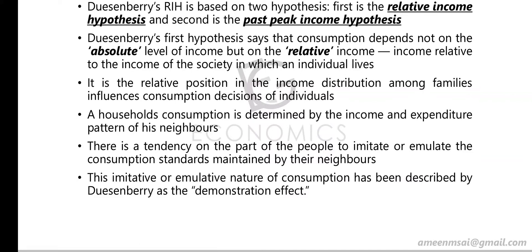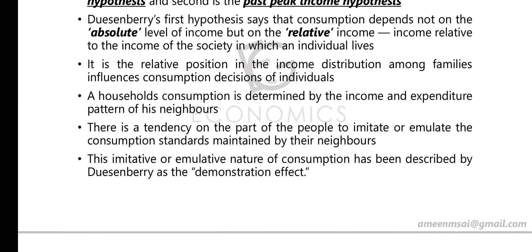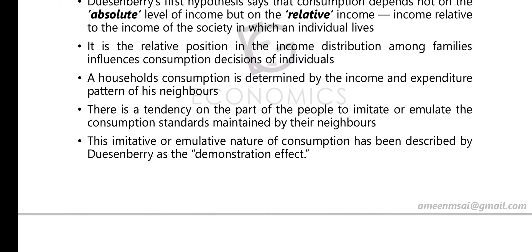For example, an individual is earning 50,000 a month and on average his society is earning only 25,000. So on average his society will be spending around 15,000 to 20,000 a month and saving 5,000. Since the society earns only 25,000, his expenditure will reach around 20,000 to 25,000. However, when the society around him earns around 75,000 a month, they will be spending 50,000 to 60,000 a month. In this condition, even though he earns only 50,000, he will try to spend more than 45,000. That is what the Relative Income Hypothesis says.